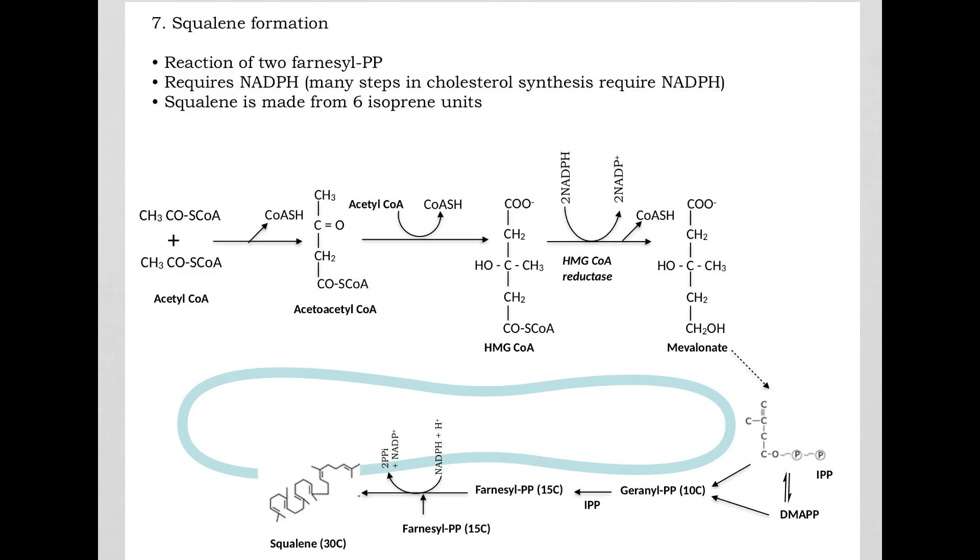In the next step, the farnesyl pyrophosphate reacts with another farnesyl pyrophosphate. So 15 carbons plus 15 carbons to give us a 30-carbon intermediate called squalene. And this requires NADPH. So squalene with 30 carbons, you can see, really is derived from six of these isoprene units. Each isoprene unit has five carbons. Squalene has 30 carbons. So that's why we say squalene is derived from, basically derived from six isoprene units.